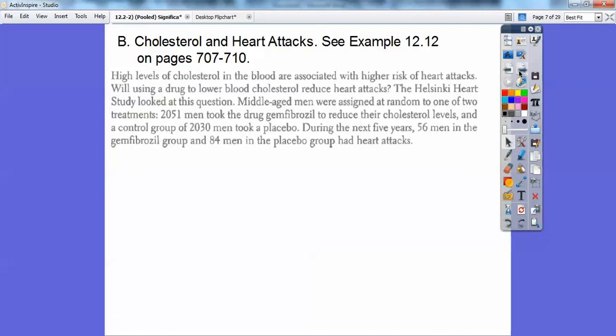During the next five years, 56 men in the gemfibrozil group and 84 men in the placebo group had heart attacks. So here's the first sample proportion. Remember sample proportion has a P hat. So P1 hat is 56 of them had heart attacks out of the 2051. So the P1 hat is 2.73 percent or 0.0273.